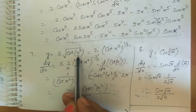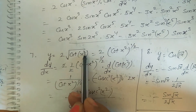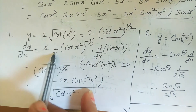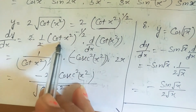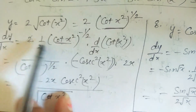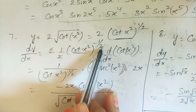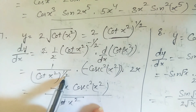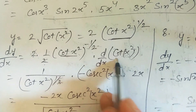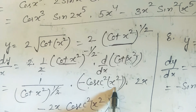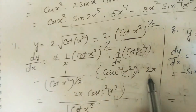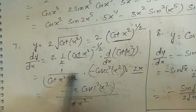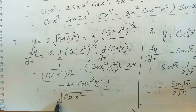Question 7: y = 2√(cot(x²)). Writing as 2·[cot(x²)]^(1/2), apply chain rule: 2 · (1/2)·[cot(x²)]^(−1/2) · d/dx[cot(x²)]. The 2s cancel. Derivative of cot(x²) = −cosec²(x²)·2x. Answer: −2x·cosec²(x²) / √(cot(x²)).